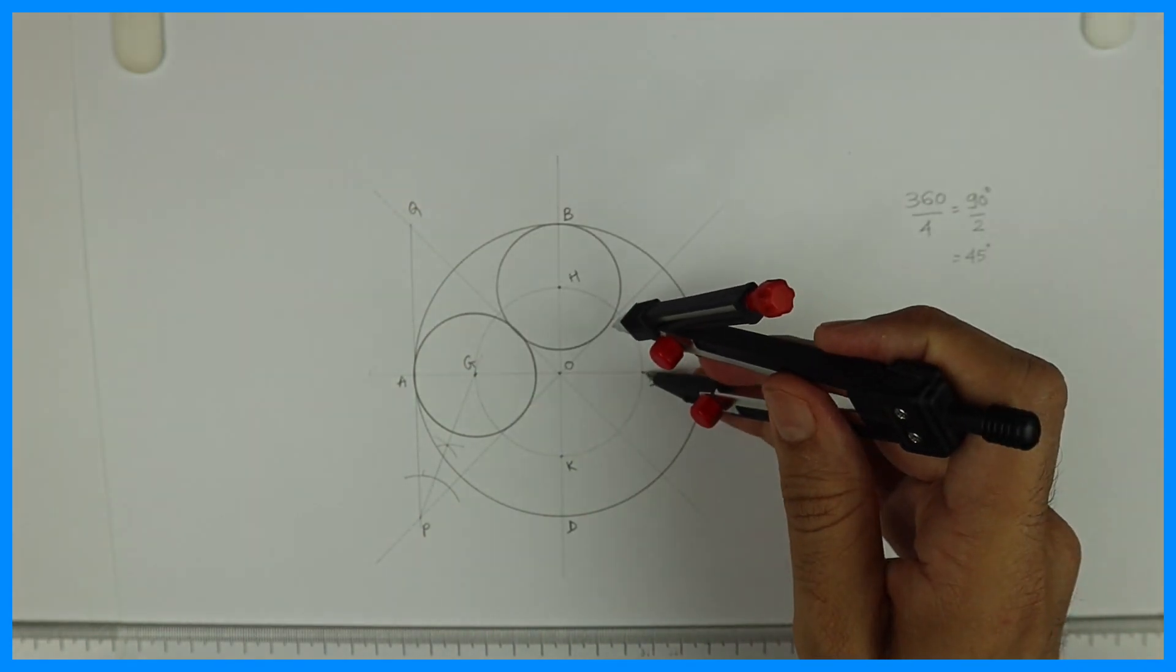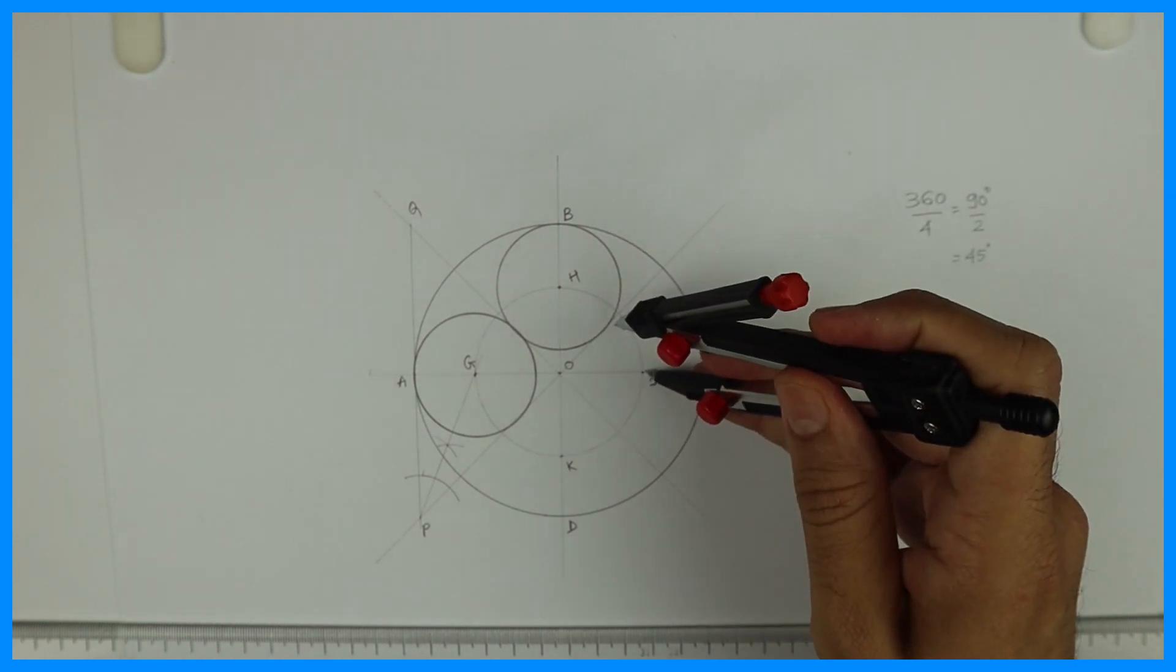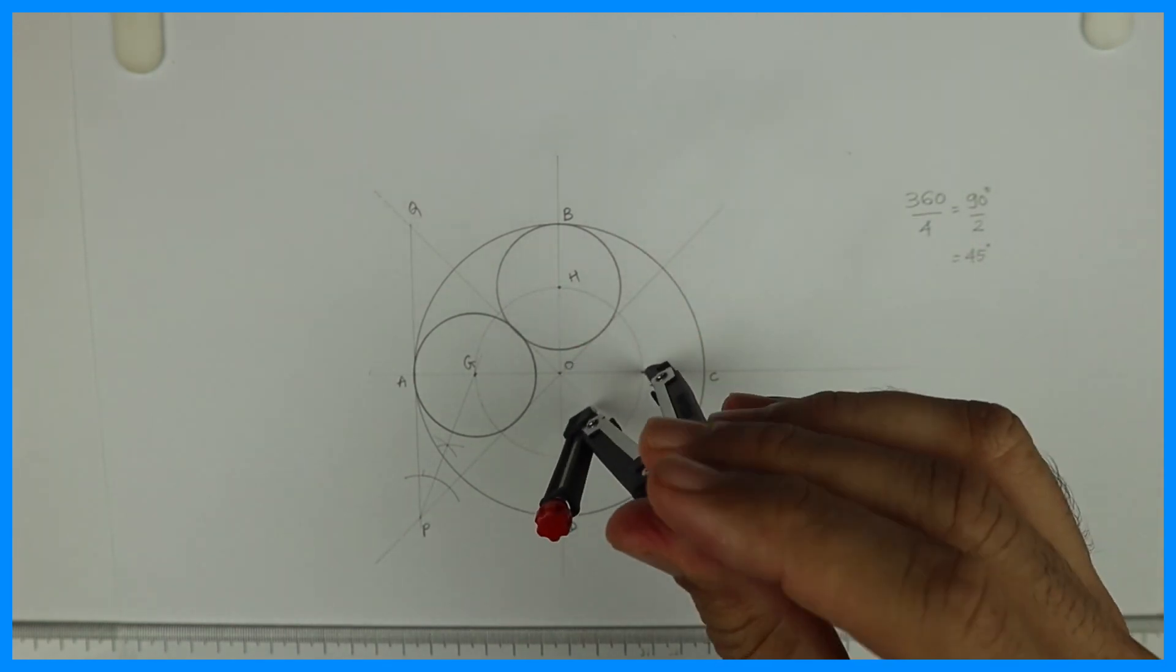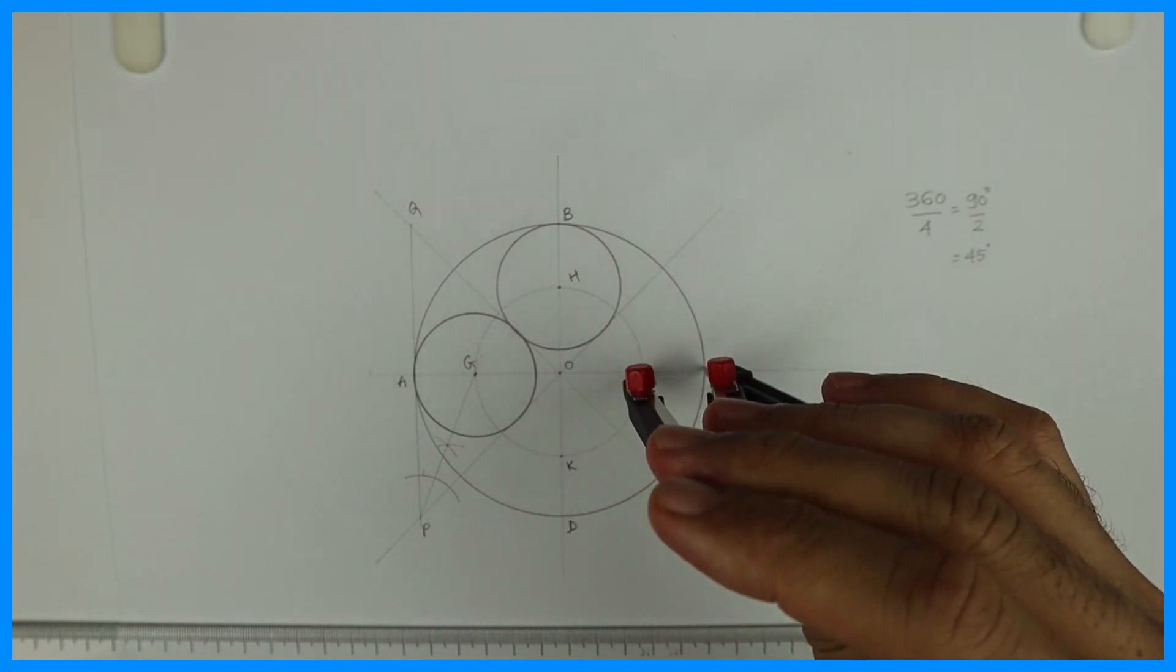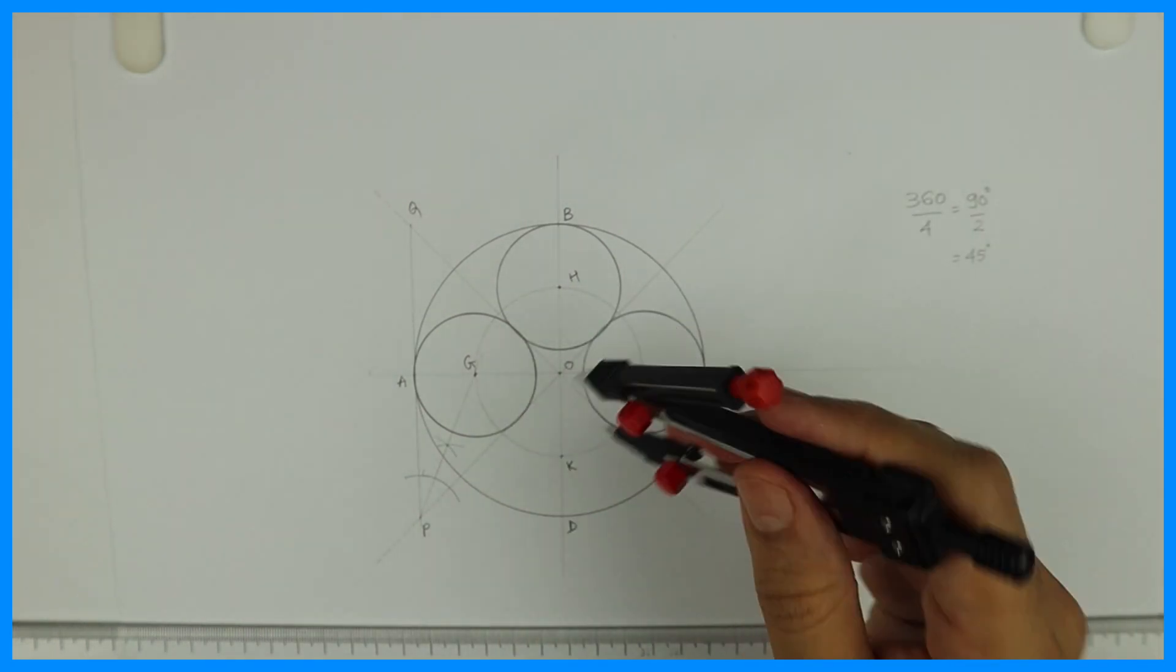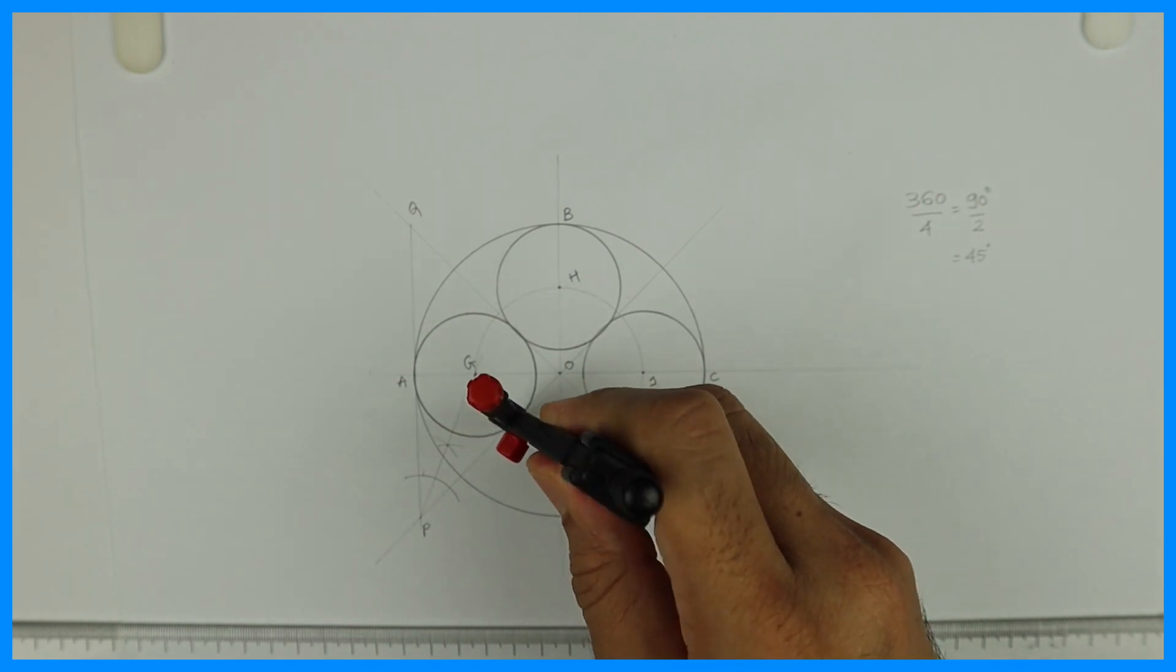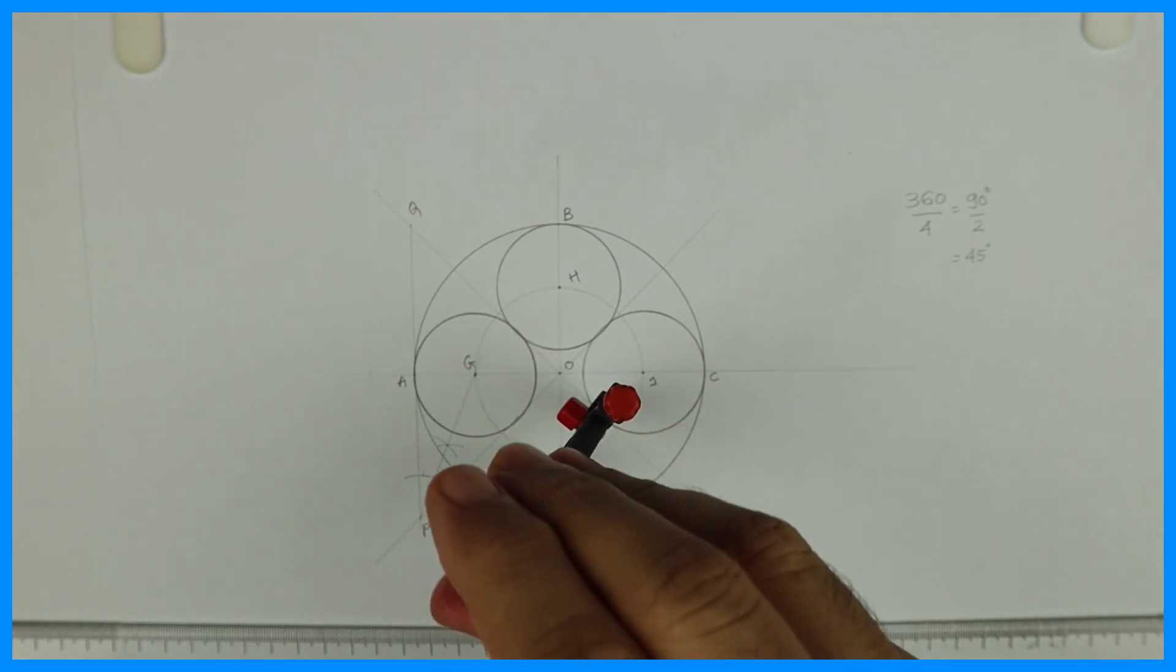From J also we are drawing circle J to C. And same from K, K to D. See, all the four circles would be the same.